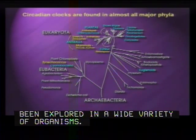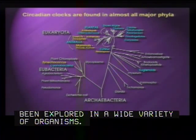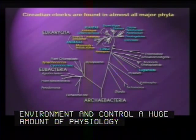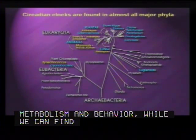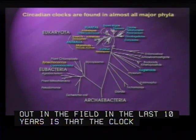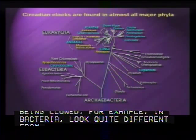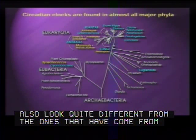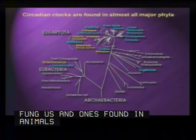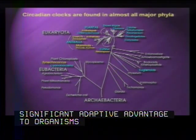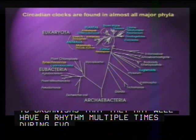One big question that's out there — this came up at lunch today — is the question of the evolutionary origins of clocks. While we can find these 24-hour rhythms that are entrained by the environment and control a huge amount of physiology, metabolism, and behavior in most genera, the surprising result from the last 10 years is that the clock genes cloned in bacteria look really quite different from those in plants, which also look different from those in neurospora fungi and in animals. The possibility exists that circadian clocks confer such a significant adaptive advantage that they may well have arisen multiple times during evolution — this could be an example of convergent evolution.